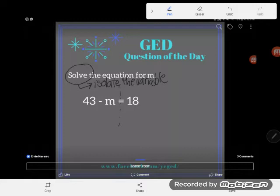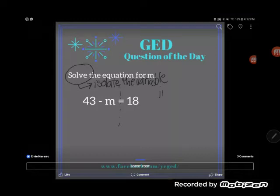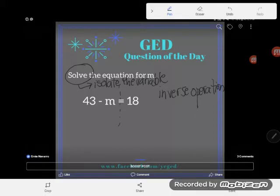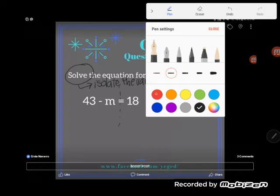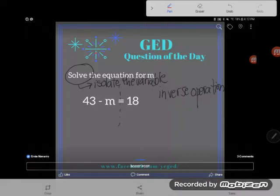The way that we get rid of math is we do the inverse operation. When you're solving an equation, you've got two sides, that equal sign, so we're going to use that power to get rid of numbers that we don't want.